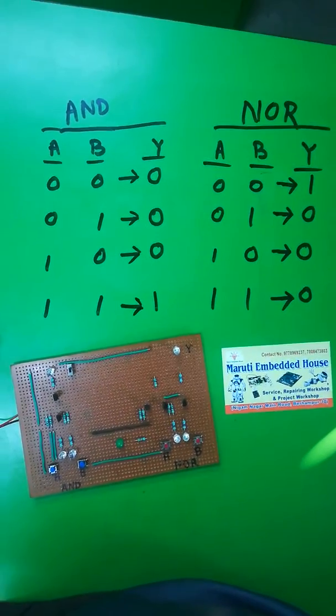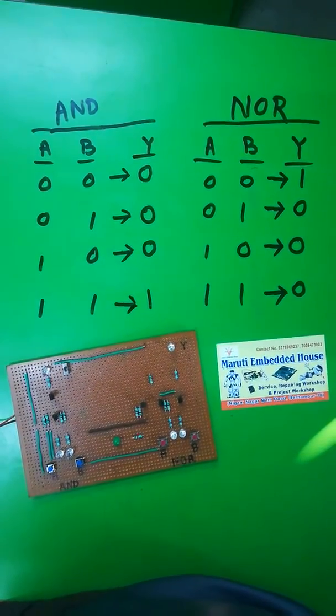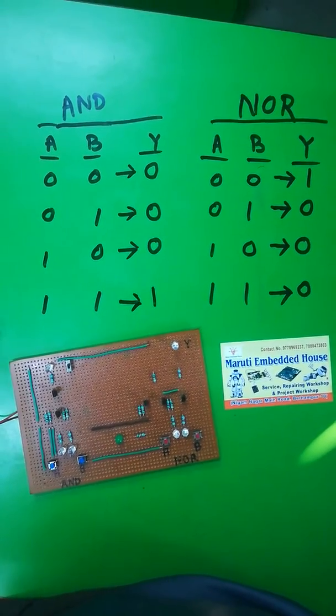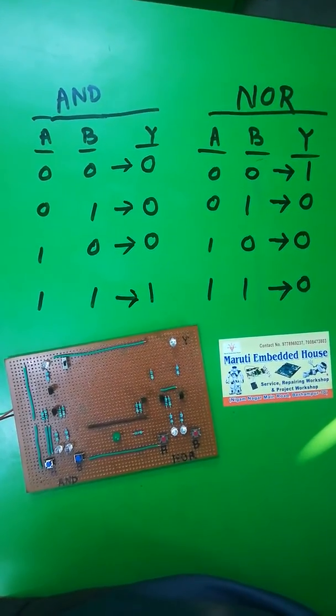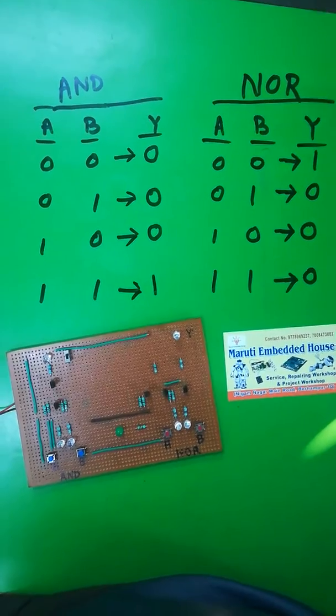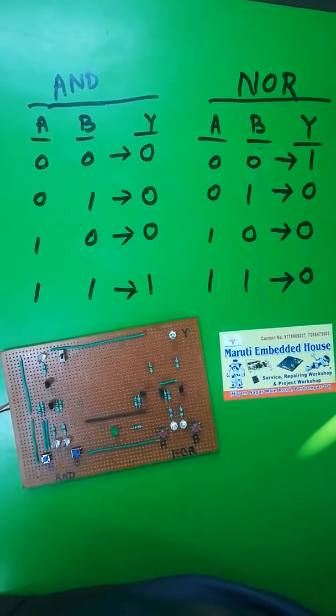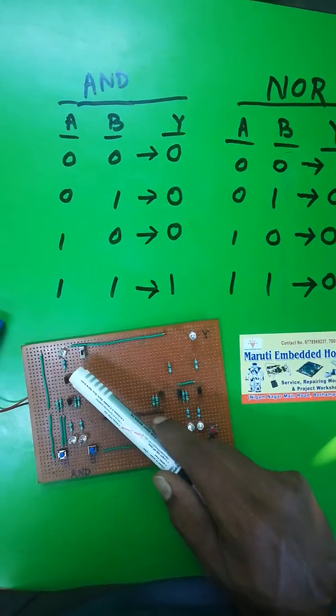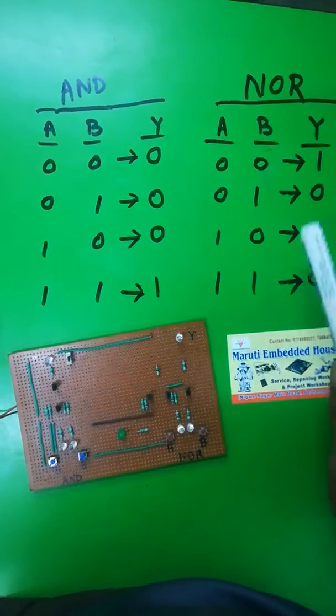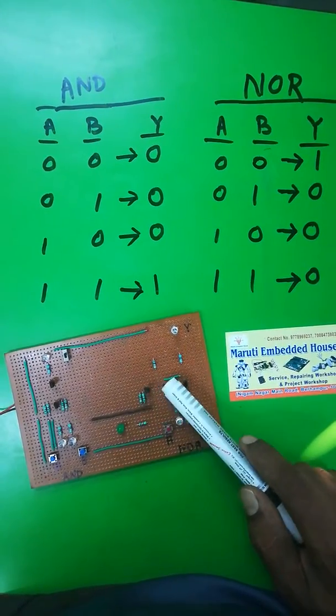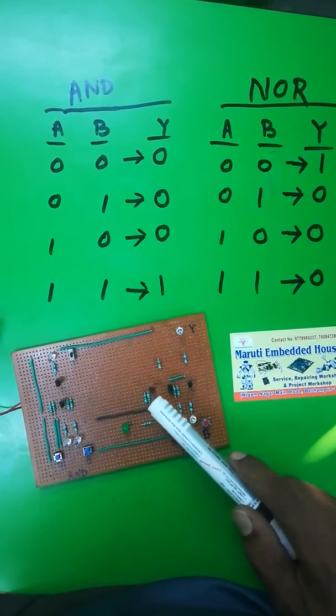Hello friends, we are from Maruti Embedded House. This is AND and NOR gate by using transistor. AND gate consists of 2 transistors and NOR gate consists of 3 transistors. All are NPN.